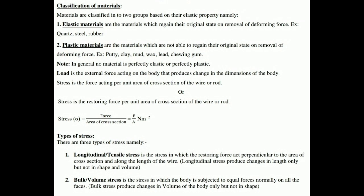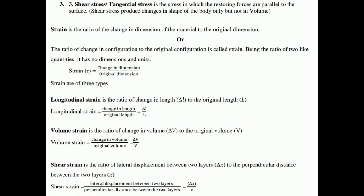Longitudinal or tensile stress is the stress in which the restoring force acts perpendicular to the area of cross section along the length of the wire — it relates only to the length, not the volume. Bulk or volume stress occurs when a body is subjected to equal forces normally on all faces, producing a change in volume but not in shape. Shear or tangential stress is the stress in which the restoring force acts parallel to the surface, producing a change in shape but not in volume.